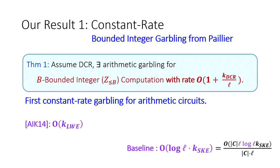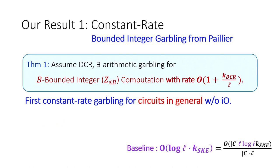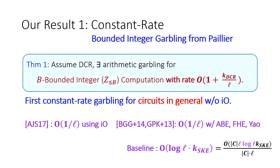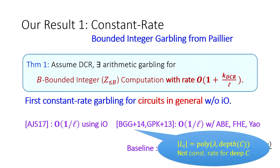For comparison, the AIK scheme has rate O(κ_LWE), where κ_LWE is the secret dimension of LWE. Ours is also the first constant-rate garbling for circuits in general without assuming IO. Two related works also achieve low-rate garbling in the Boolean setting: one has rate 1/L assuming IO, and another has rate 1/L but for wide circuits only. Their scheme has large input labels polynomial in circuit depth, so for deep circuits their rate is not constant.